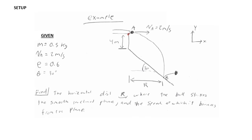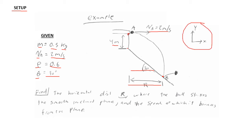Now we create our setup page with all given information: mass = 0.5 kg, velocity at A = 2 m/s, coefficient of restitution = 0.6, and slope angle = 30 degrees. The diagram shows the 4-meter vertical height from the top of the incline to point A, with point B as the impact location and horizontal distance R from A to B. We establish a standard Cartesian coordinate system with positive X to the right and positive Y upward.